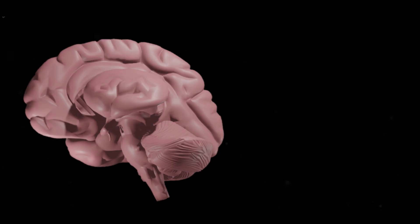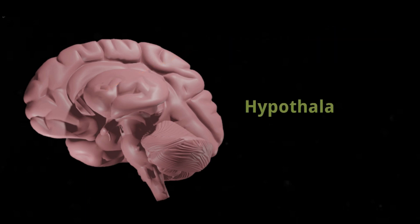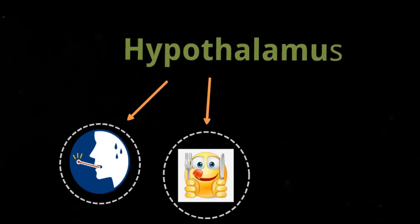Inside the cerebrum there is a small structure called the thalamus. It controls many sensory functions. The hypothalamus lies at the base of the thalamus. It controls body temperature, hunger, and thirst.